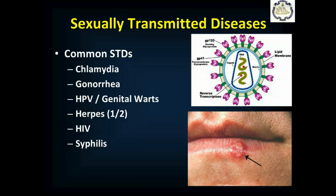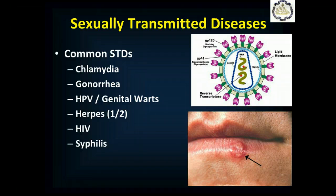In these pictures, the upper picture is the HIV virus, and the lower picture is a cold sore, which is a herpes simplex virus — typically type 1 on the lips, but can be type 2. Genital herpes tends to be type 2, but can be type 1.